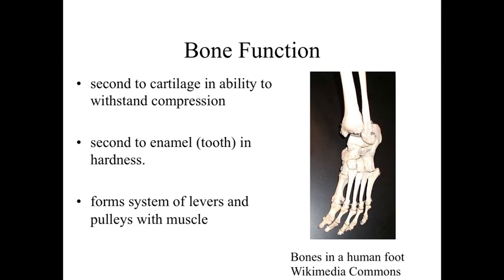If we take a look at the characteristics associated with bone and think about the relationship between structure and function, bone is going to be second to cartilage in its ability to withstand compression. Cartilage is essentially like a sponge — you can compress it, squeeze the water out, and it will rebound. Bone is very good at resisting compression, but up to a point. At a certain point, enough pressure will start crushing the bone, causing fracture, and it doesn't have the resiliency of cartilage. Bone is second to enamel in terms of hardness — a very strong, protective structure resistant to damage and compression, allowing it to serve for support and protection of internal body organs.